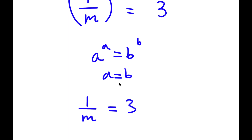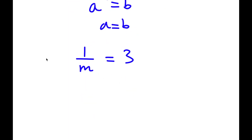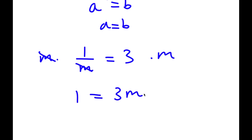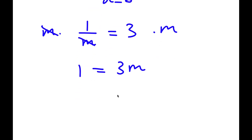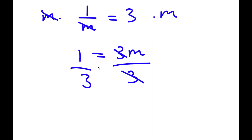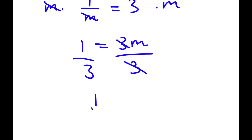To solve this, I'm simply going to multiply both sides by m. These two cancel out, and I'm left with 1 is equal to 3m. Now I'm going to divide both sides by 3, so these two cancel out, and I have 1 over 3 is equal to m.